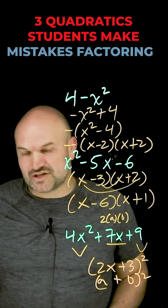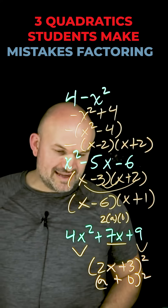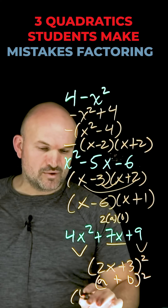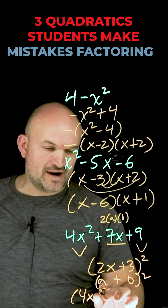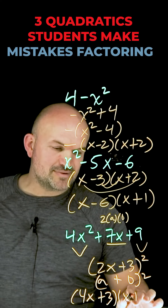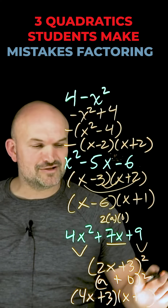So I need to factor this out properly. Thinking about which factors would work: (4x plus 3)(x plus 3) — that actually factors it correctly. So it's not a perfect square trinomial; it requires standard factoring.